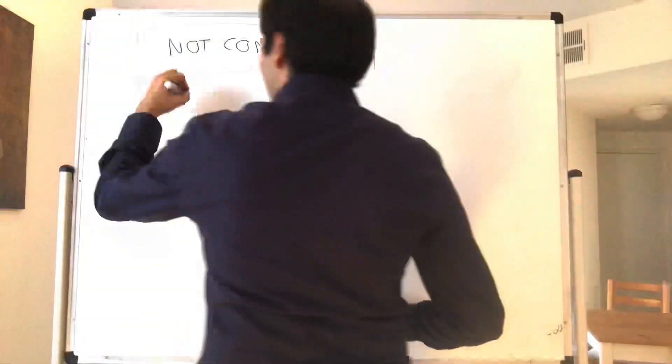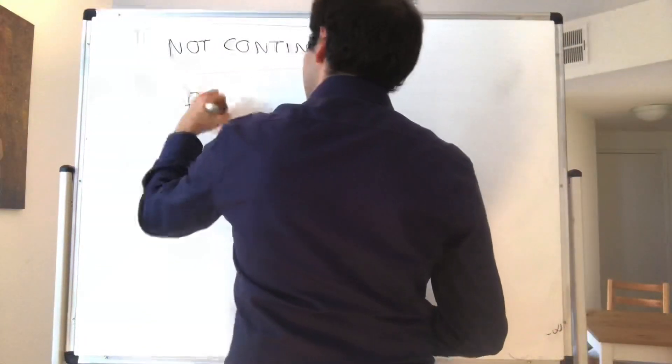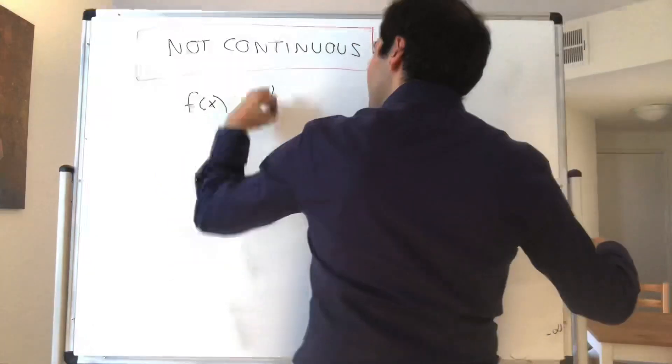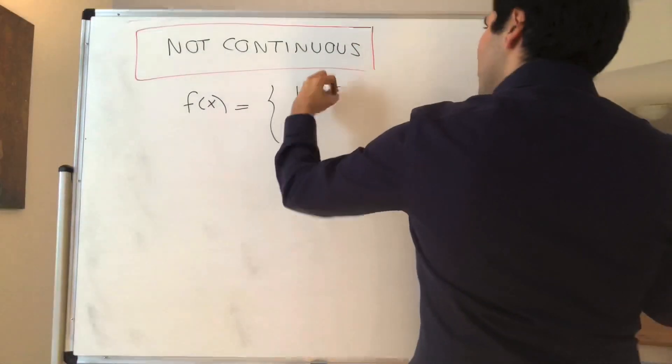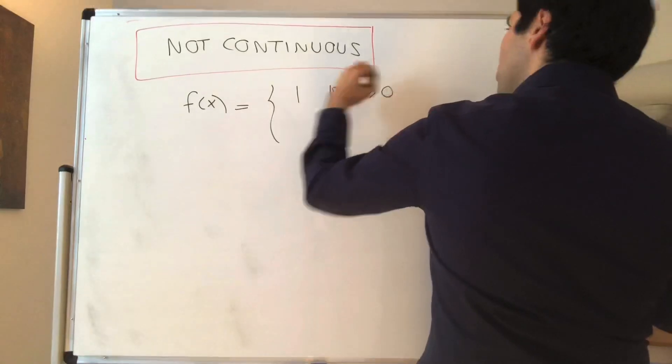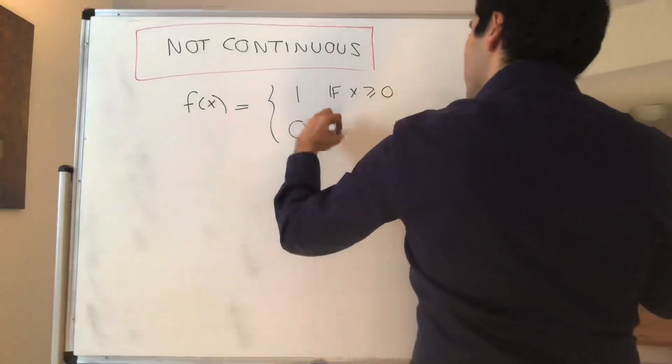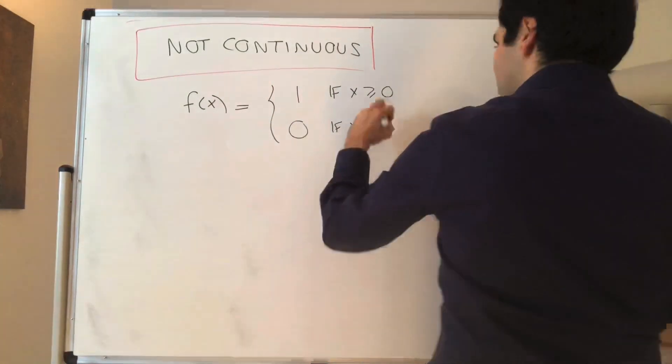So consider one of the most famous non-continuous functions: f of x which is 1 if x is greater or equal to 0 and 0 if x is less than 0.